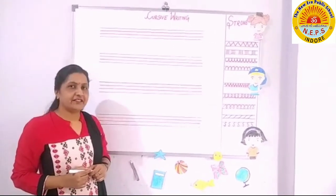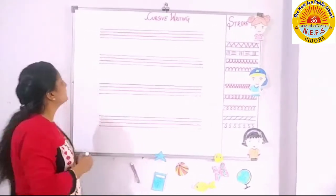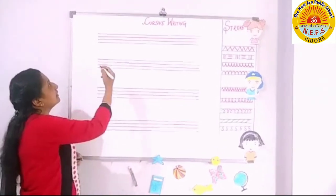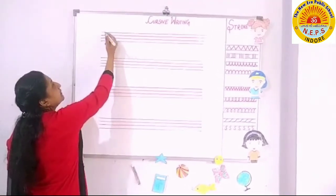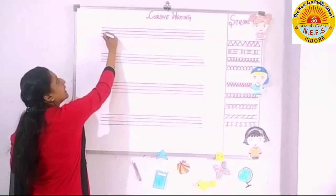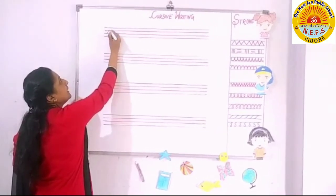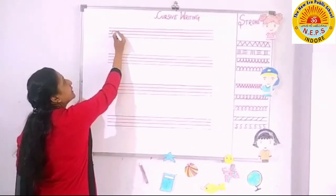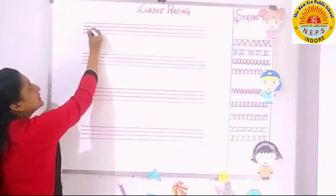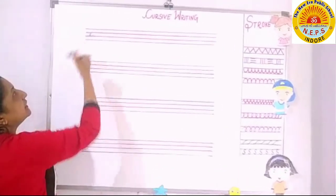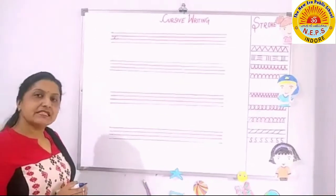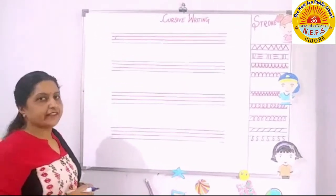C curve, cat. We will start with a lower midi line to upper midi line. Make a curve downwards. C — that's C. C curve, cat.